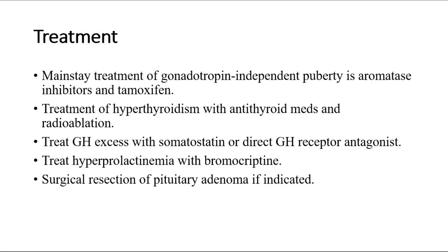For treatment, the mainstay for gonadotropin-independent precocious puberty is aromatase inhibitors and tamoxifen. Hyperthyroidism is treated with antithyroid medications and radioablation. Growth hormone excess is treated with somatostatin analogues or direct GH receptor antagonists. Hyperprolactinemia is treated with bromocriptine, and surgical resection of pituitary adenoma if indicated.